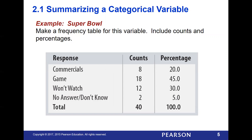We have people who are watching the commercials — eight people out of the 40 who responded, which makes up 20% of our respondents. Then we had 18 people who wanted to watch the game, 12 people who won't watch it at all, and two people who don't know. This frequency table shows how many people had each response as well as what percentage those people were out of our total number of respondents.